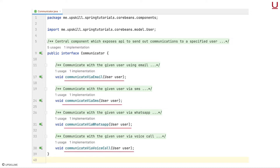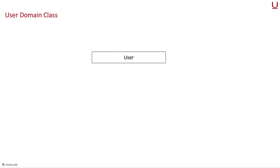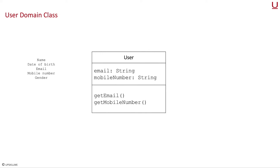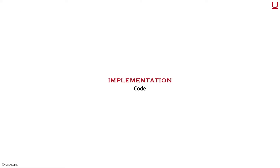Since there can be more than one way of sending email, the email component should internally delegate its task to sub-components like SendGrid component or Mailgun component. One more important aspect is the user — envision a class to map the user properties from the real world. Some properties we can think of are name, date of birth, email, mobile number and gender. In our case we are only interested in two properties: email and mobile number. This class is what is known as a domain class and an object of this class represents a physical user. With the architecture sorted out, implementing the solution is comparatively simple.